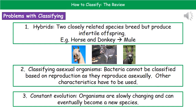We do have some problems with classifying. The first problem is hybrids — where two closely related species are capable of breeding together but produce infertile offspring. A good example is a horse mating with a donkey to produce a mule, which is infertile. Even though they can breed, because the offspring is infertile they are not the same species.